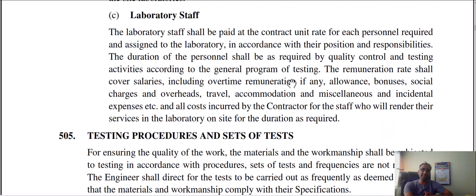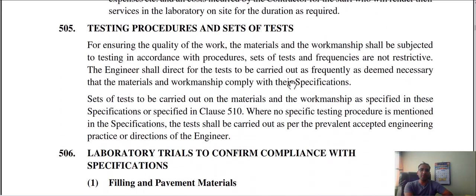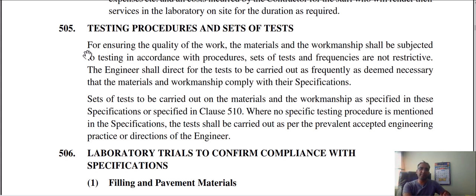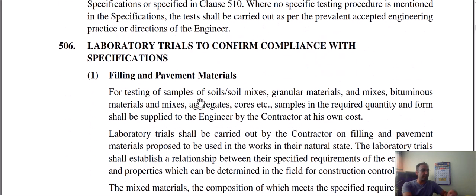What is the testing procedure? The testing procedure is not restrictive. It is set to ensure that the engineer is satisfied — the specification, contract, or engineering norms — the testing procedure ensures the engineer's requirements are met. This includes laboratory trials to confirm compliance with the specification. The compliance specification can be verified, and this is done at the contractor's cost.